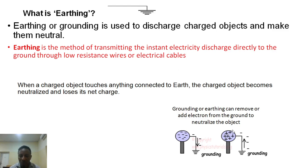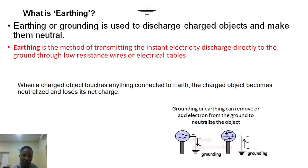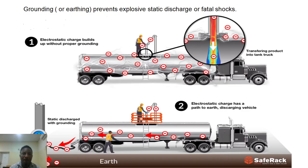If a charged object is positively charged and connected with a wire to the earth, it automatically becomes neutral by accepting electrons from the earth. The earth can do two things: it can give as many electrons as possible to a charged object, and it can collect as many electrons as possible, neutralizing the object. Grounding prevents explosive static discharge or a case of fatal shock.